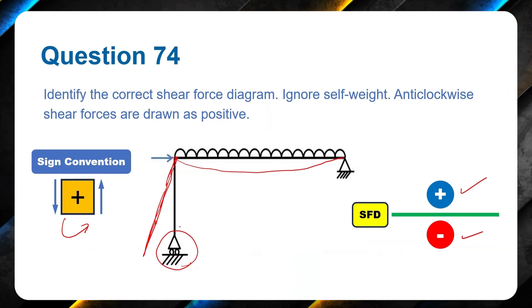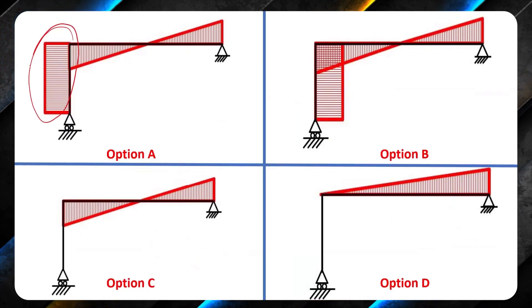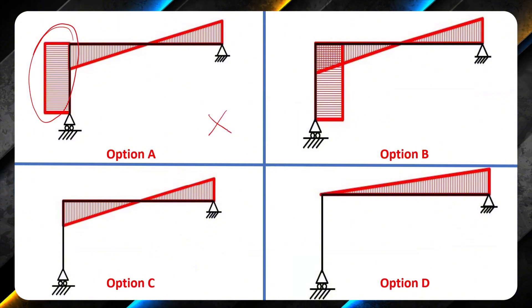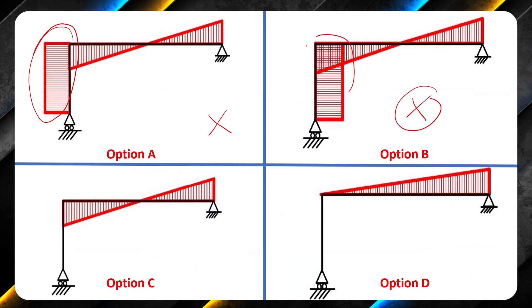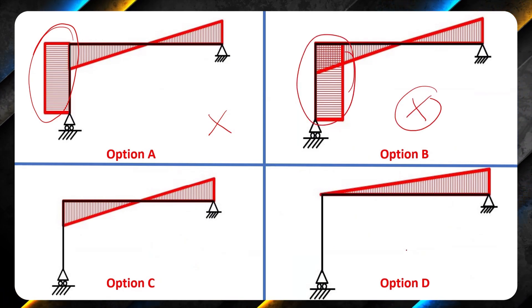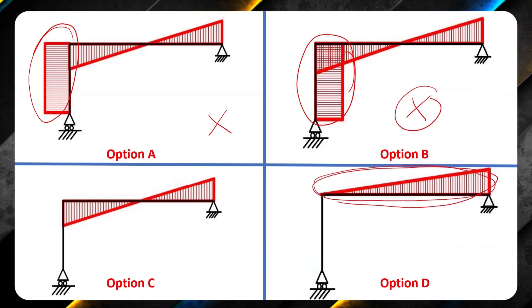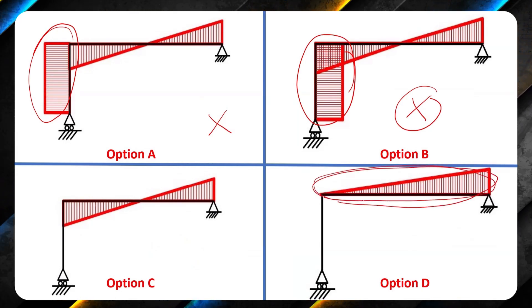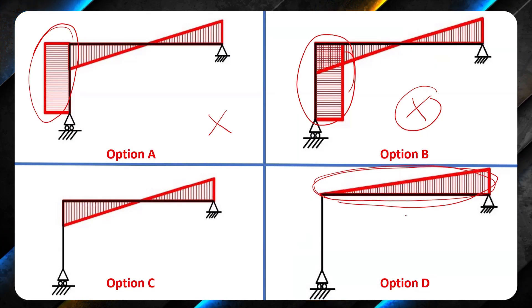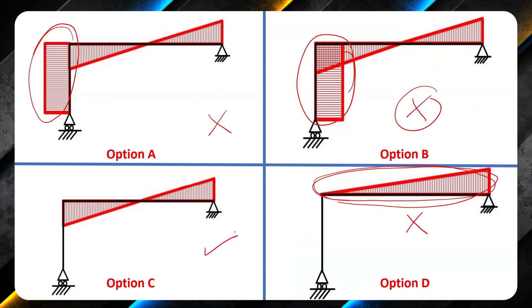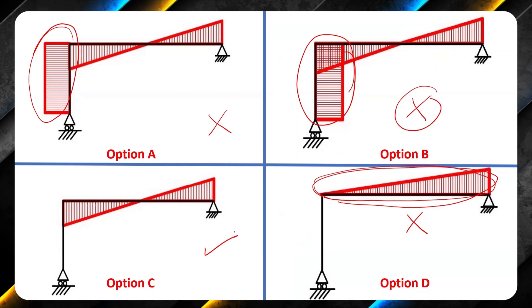Option A is incorrect because shear force is not developing in the column. So I will cross this option. Option B is incorrect as well because no shear force is developing in the column. Option D is incorrect because we have uniformly distributed load. When we have uniformly distributed load, the shear force will not be like that. It will create a couple. So this is wrong. Option C is the correct option. And I will prove it by assuming some values.